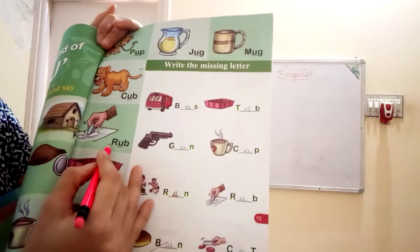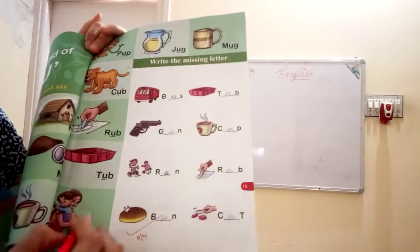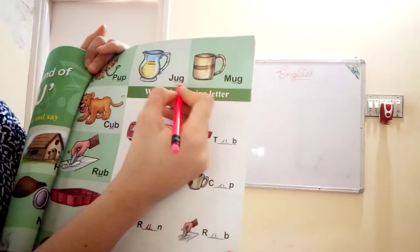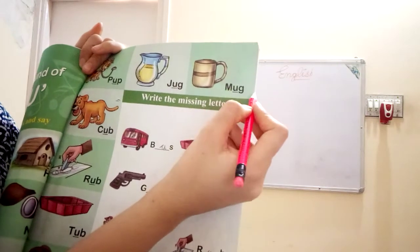R.U.B. Rub. T.U.B. Tub. H.U.G. Hug. J.U.G. Jug. M.U.G. Mug.